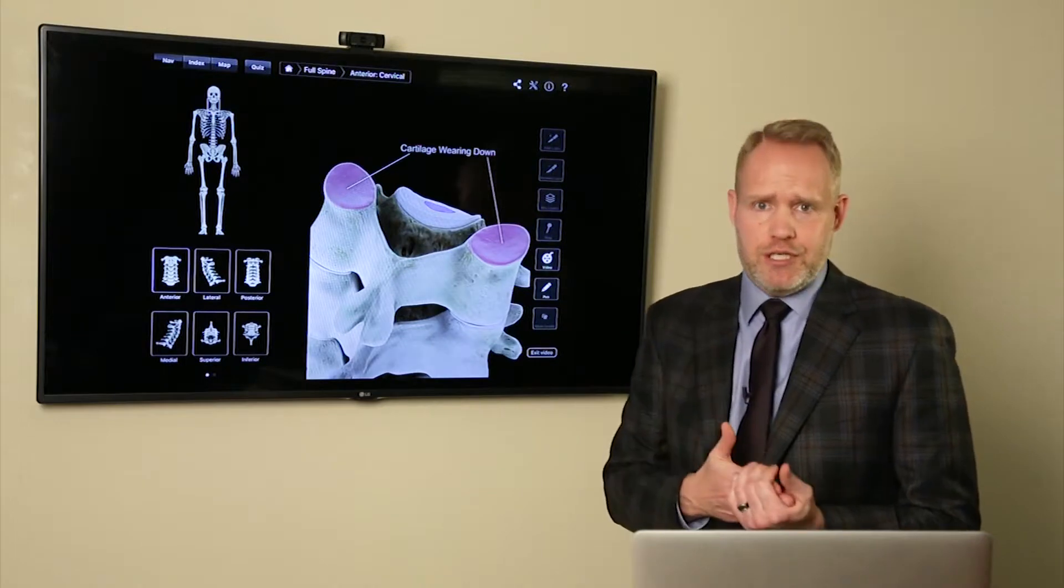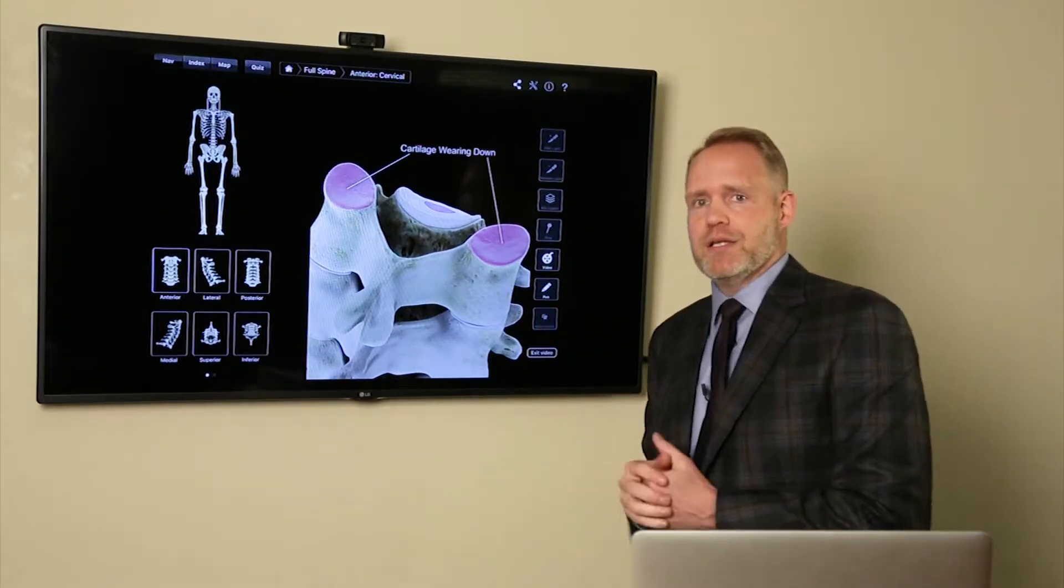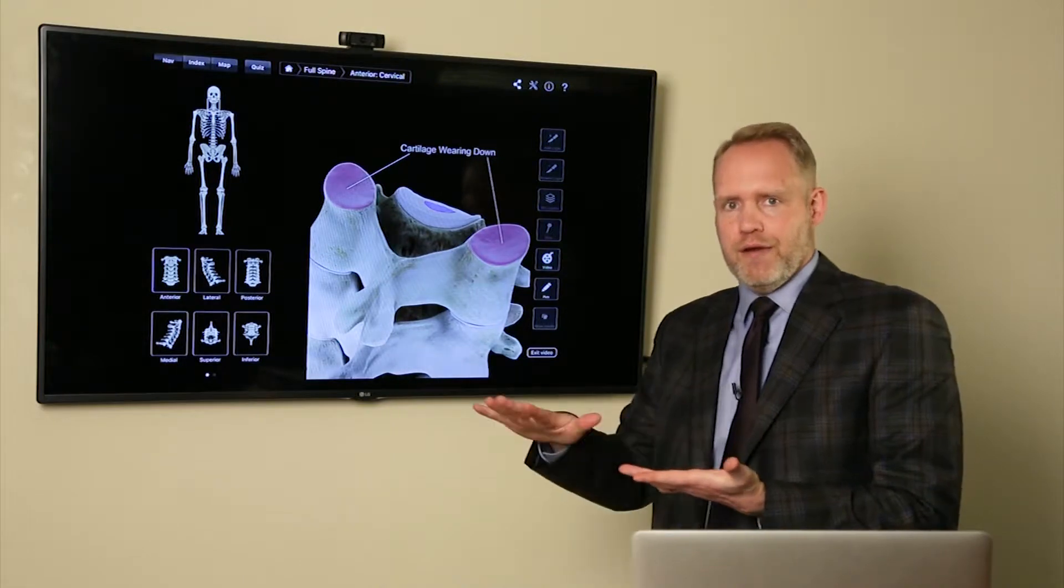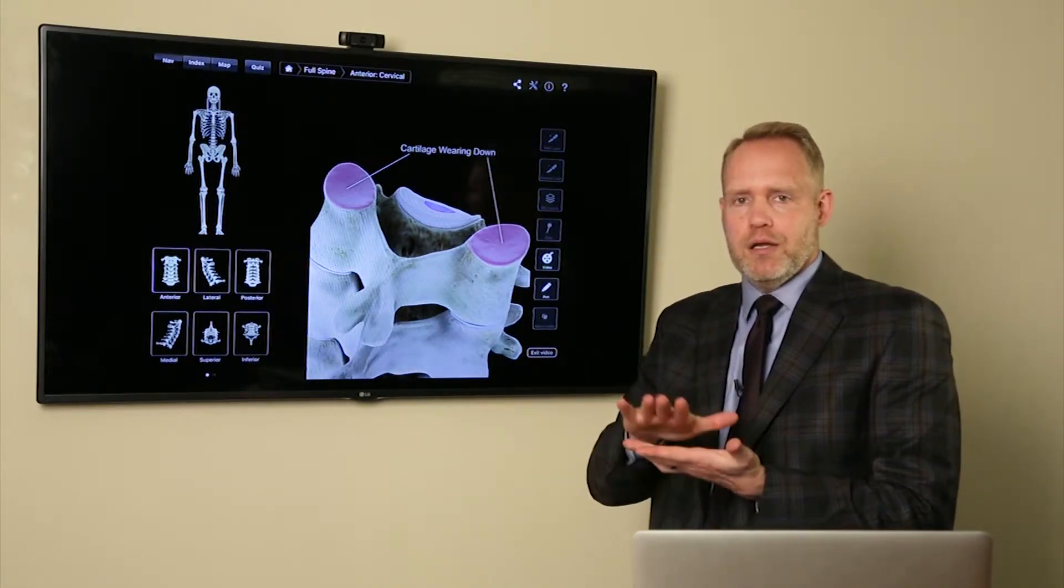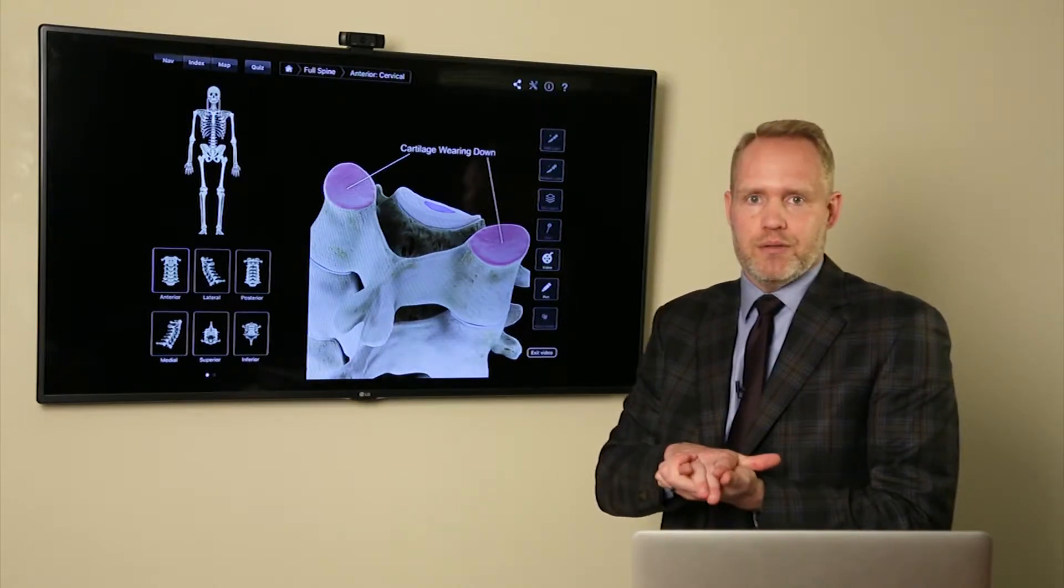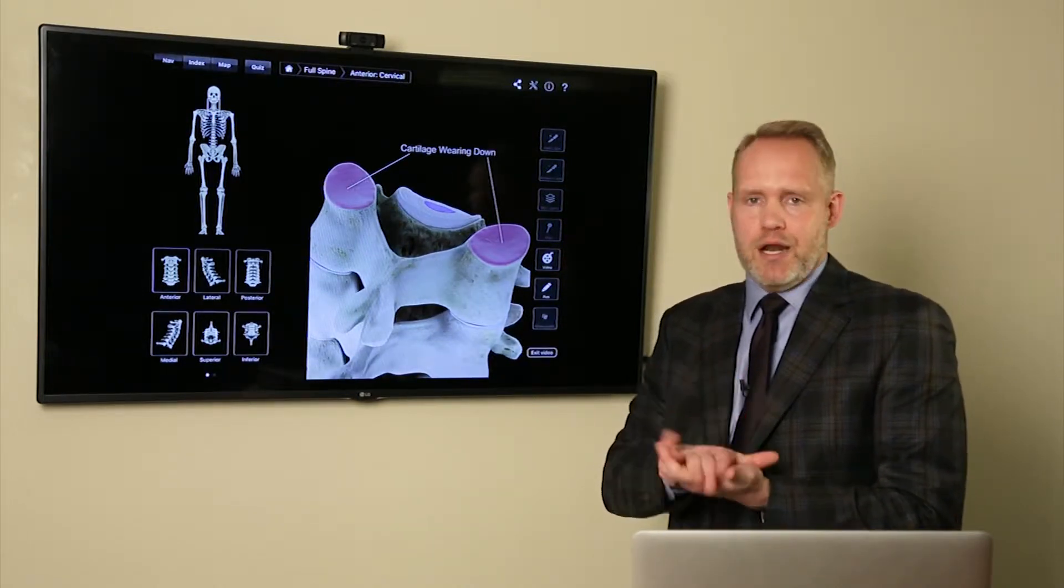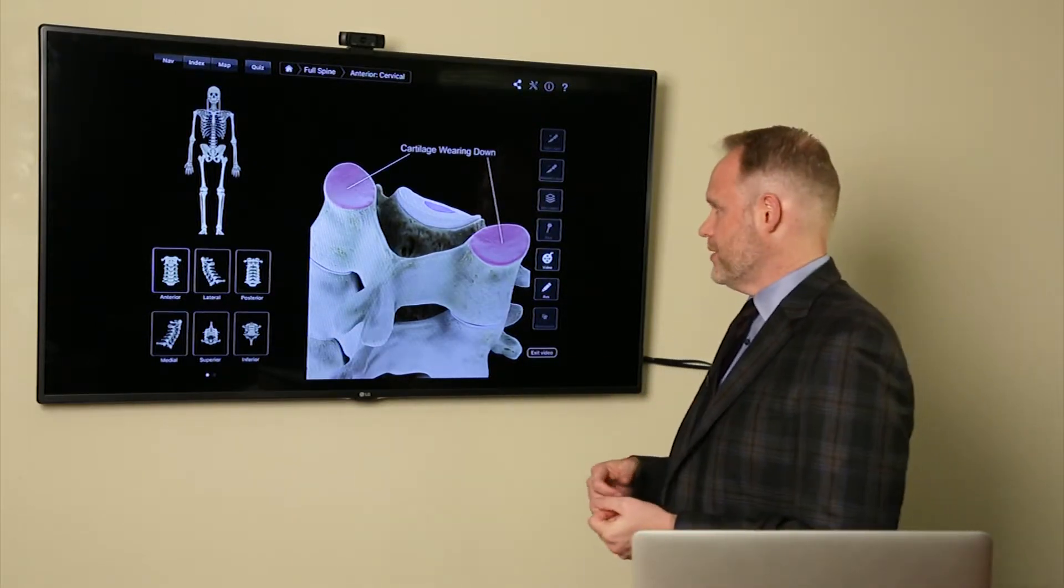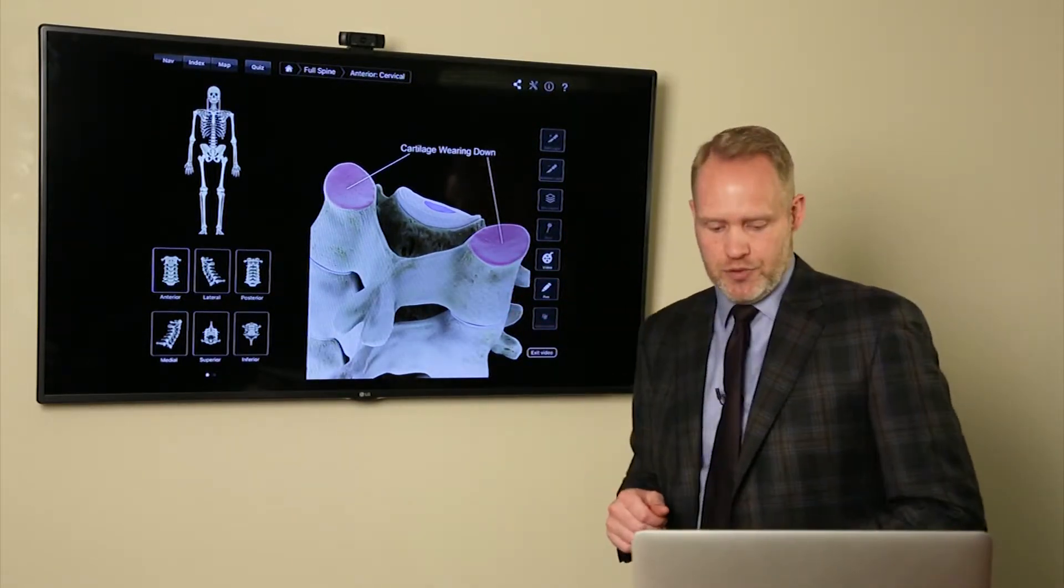Either way, whether it's through degeneration or through traumatic events such as a car crash, once you start wearing through or tearing off that sliding material, it's no longer sliding material nice and smooth. It's now bone versus bone. And that's gritty. There's a lot of nerves in the bone, it's painful. And that's generally what we call facet joint syndrome. It's simply injury to the facet joints themselves.